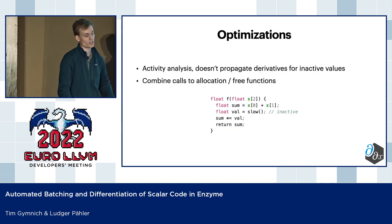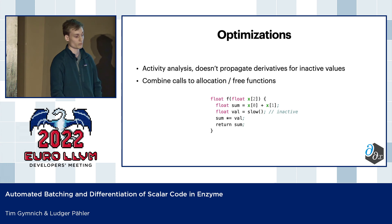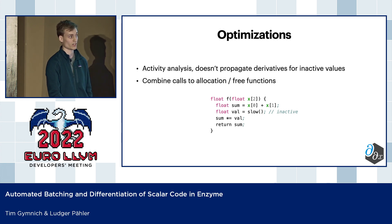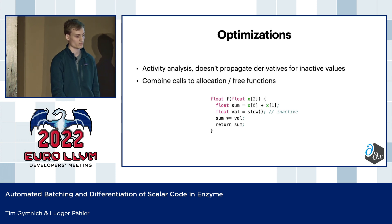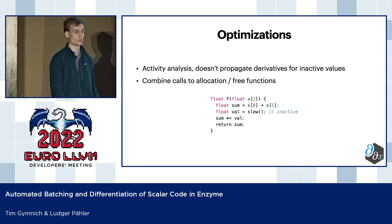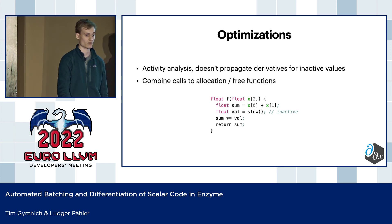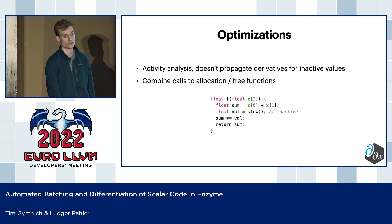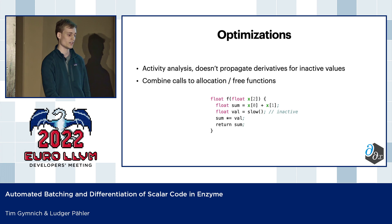Some of the optimizations we can perform here are activity analysis as already shown before — we can save some computations of inactive values. And there are also a few low-hanging fruit we could pick by basically combining calls to malloc and free.